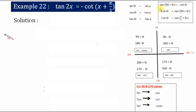Therefore, tan(90° + θ) = -cot θ. Since we have 90° here, the tan converts to cot. And 90° + θ is in the second quadrant where tan is negative, that's why you have a negative sign. So tan(90° + θ) = -cot θ, which means -cot θ = tan(90° + θ).